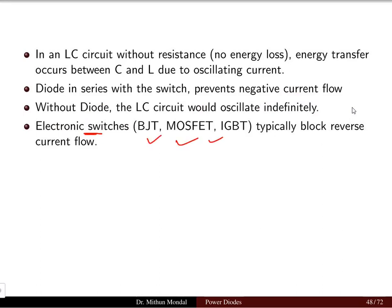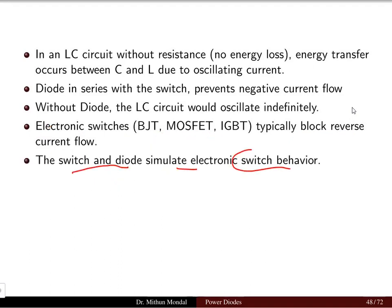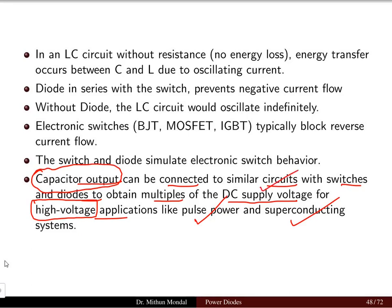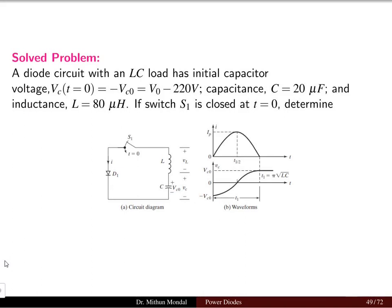All switches can be in the form of BJT, MOSFET, or IGBT — these are electronic switches which typically block reverse current flow. We will study this in detail in coming power electronics lectures. The switch and the diode simulate electronic switch behavior in the form of BJT, MOSFET, or IGBT. The capacitor output can be connected to similar circuits with switches and diodes to obtain multiples of the DC supply voltage for high voltage applications such as pulse power or superconducting systems.